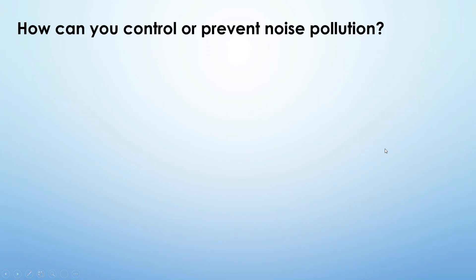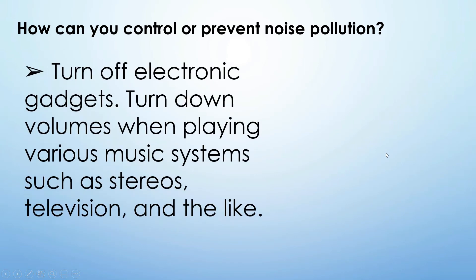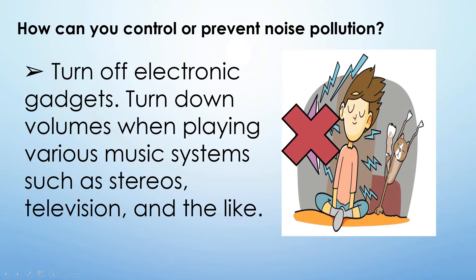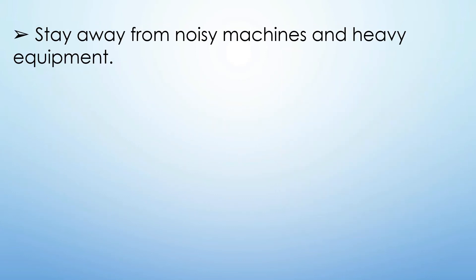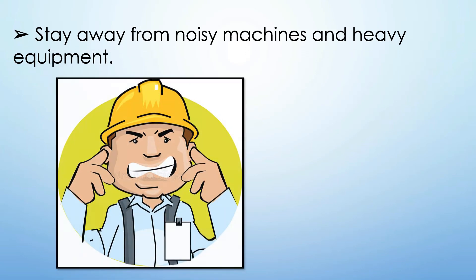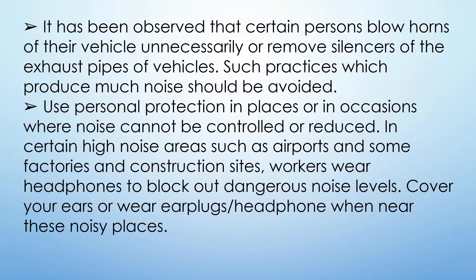How can you control or prevent noise pollution? Turn off electronic gadgets. Turn down volumes when playing music systems such as stereos and televisions. Stay away from noisy machines and heavy equipment. Avoid unnecessary horn blowing or removing silencers from vehicle exhausts, as these produce more noise. Use personal protection in places where noise cannot be controlled — in high-noise areas such as airports, factories, and construction sites, workers wear headphones. Cover your ears or wear earplugs or headphones when near noisy places.